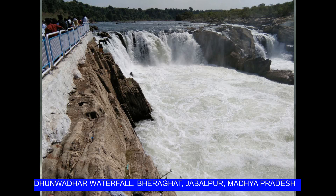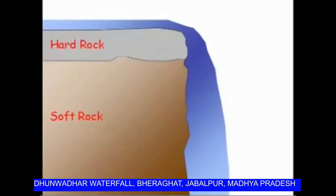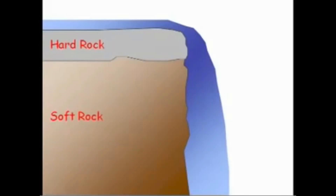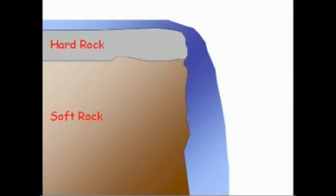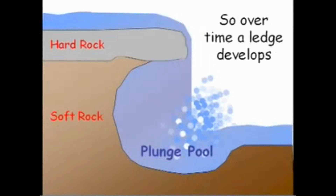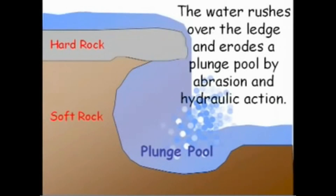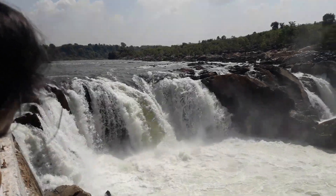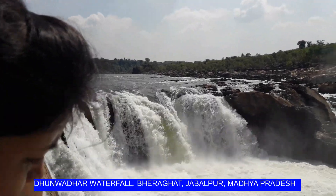Waterfalls develop when a change of lithology — rock type — takes place along the river's course, resulting in differential erosion. When the rock type of the river's channel changes from a resistant rock to a less resistant one, for example granite to limestone, the river erodes the less resistant rock faster, producing a sudden drop in the gradient of the river. As the river flows over the resistant rock, it falls onto the less resistant rock, eroding it and creating a greater height difference between the two rock types, producing the waterfall.